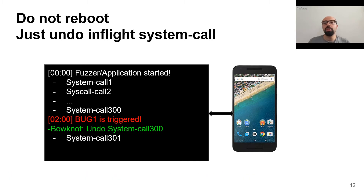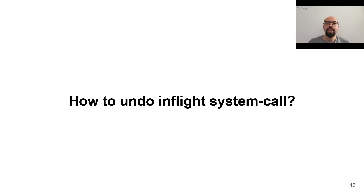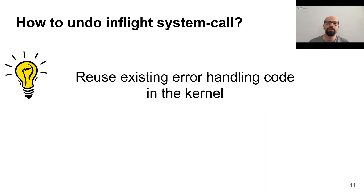Our idea is to undo all the side effects of this half-executed system call and put the system back in an expected state. This way, without losing the functionality, the system could serve the following system calls. An important question here is how to undo the in-flight system call.